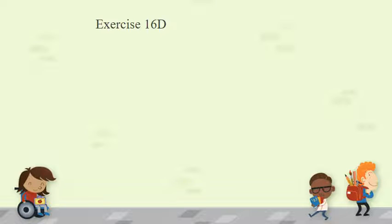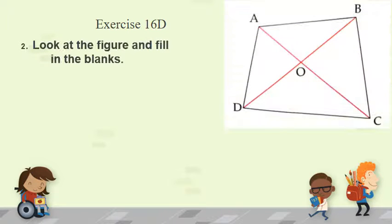Now let's move to exercise 16B question 2: look at the figure and fill in the blanks. In this figure you can see quadrilateral ABCD, which has four sides: AB, BC, CD, and DA. It has four vertices: vertex A, vertex B, vertex C, and vertex D. This quadrilateral has two diagonals — the line segments that join the opposite vertices. One diagonal is diagonal AC, joining vertex A and vertex C, and the other diagonal is diagonal BD, joining vertex B and vertex D.